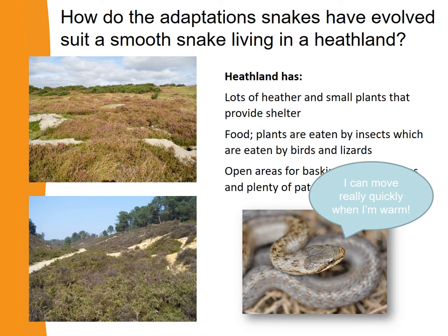The smooth snake also doesn't have limbs. If you think of all those heather plants, it can wriggle in and around them, escape predators, and live amongst the heather when it's not out basking. Those are just a few ways in which smooth snakes have evolved to suit living in a heathland habitat. Over millions of years, evolution has happened and smooth snakes and the UK's other reptiles are well adapted to live in heathlands.